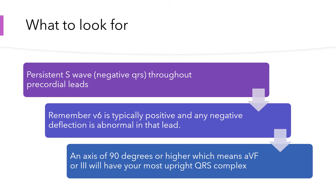So what to look for on the ECG: a persistent S wave throughout the precordials. If that vector rotates towards the spine, the depolarization vector moves towards the back of the patient, giving you negative waves — S waves — throughout your precordial leads. If you see an S wave in V6, that should already key you in to an abnormality, because V6 should be almost completely positive in a normal patient. If you have that combination — a persistent S wave in the precordials with an axis of 90 degrees or higher, meaning AVF or lead III has the most upright QRS in the limb leads — you have criteria for a pulmonary disease pattern.